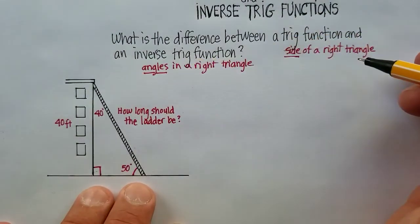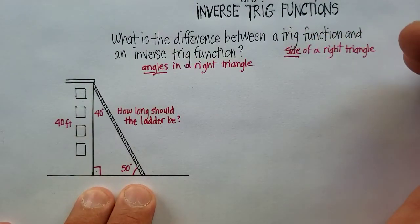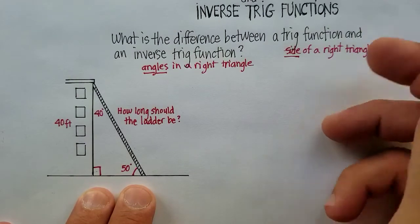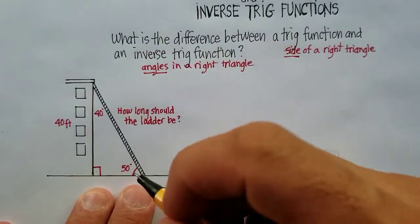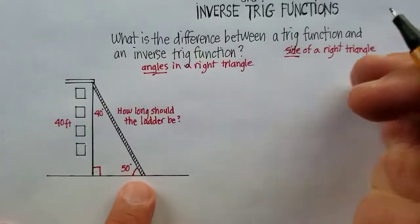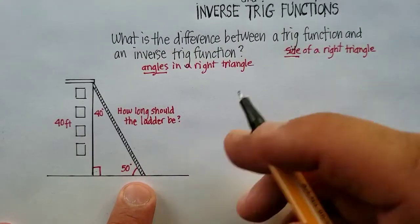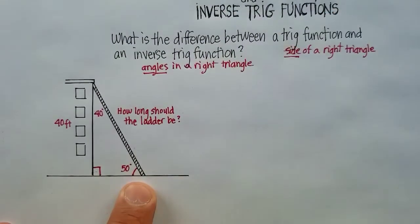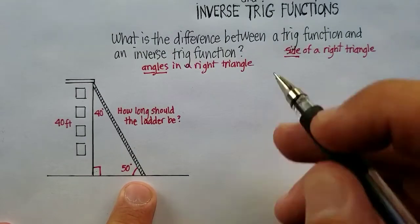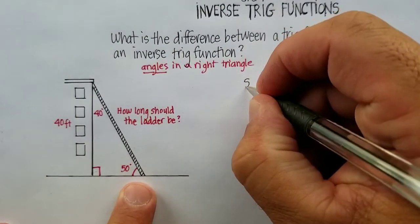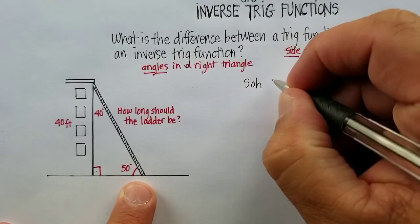So we already know the angles, but what about the sides? Well, we need to use a regular trig function to do that. So let's go down here. We can say that we know that according to SOHCAHTOA, right? Remember this little mnemonic device that's really handy for you to learn.